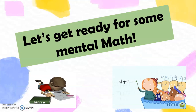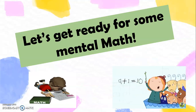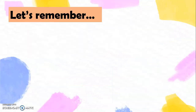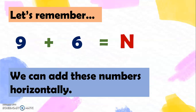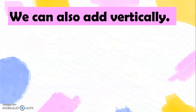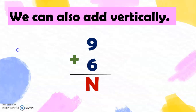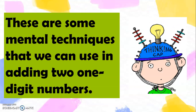So now let's get ready for some mental math. Let's remember that we can add these numbers horizontally. So we have here 9 plus 6 equals a number — we are still looking for the sum. We can also add vertically: 9 plus 6 equals a number. And these are some mental techniques that we can use in adding two one-digit numbers.